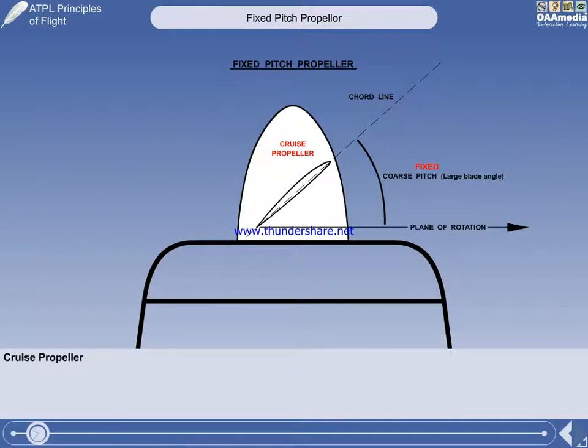There are two types of fixed-pitch propeller. The first is the cruise propeller. A cruise propeller has a large blade angle to give maximum efficiency at the cruising speed of the aircraft. A large blade angle is called coarse-pitch.